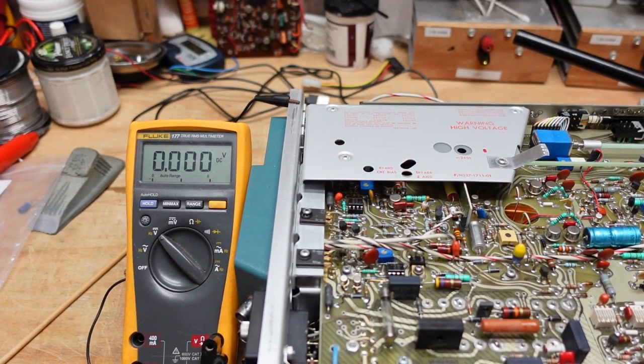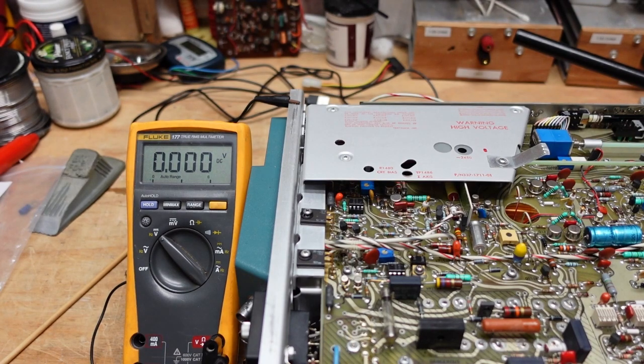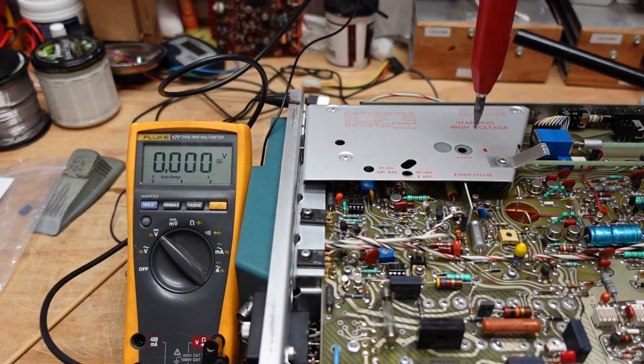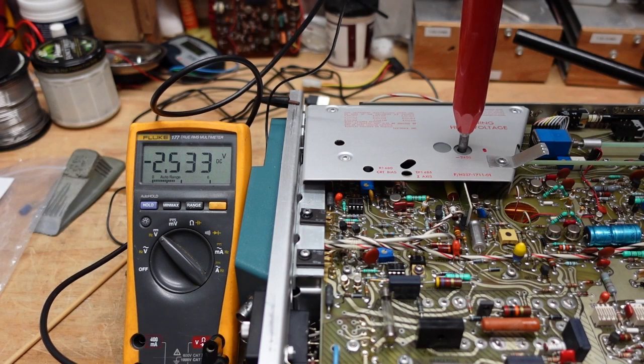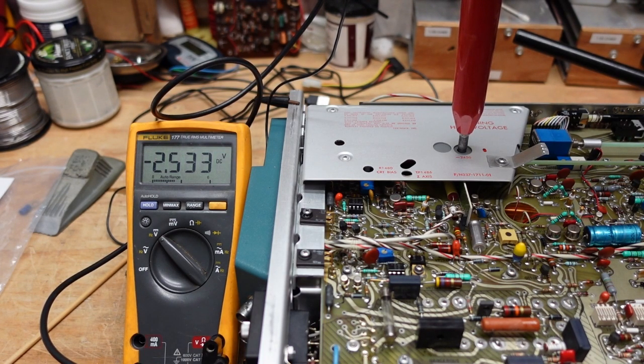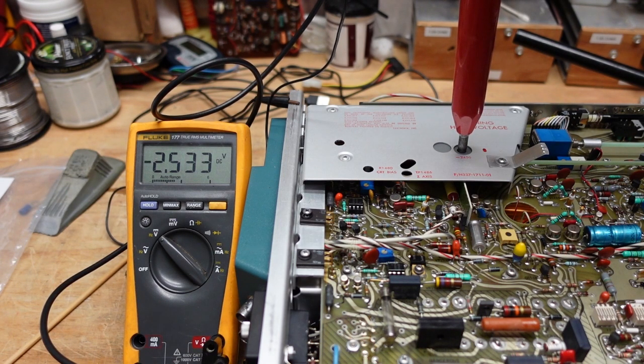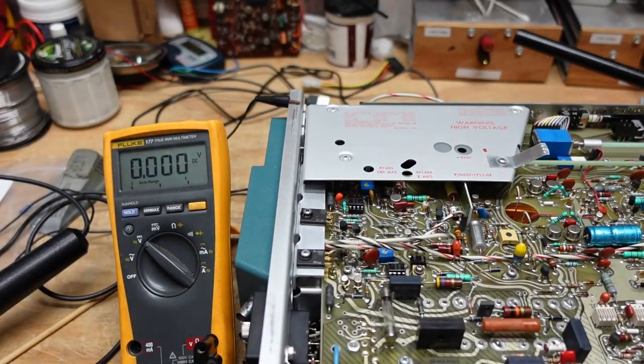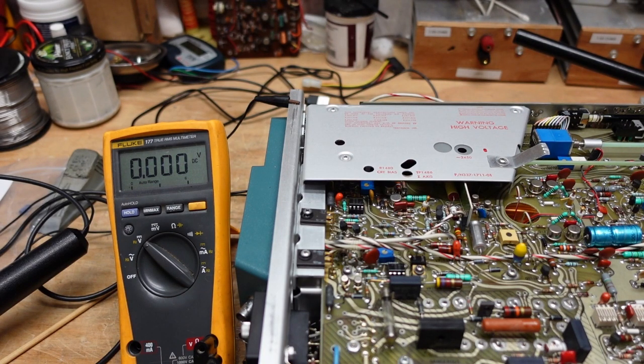We're going to turn this thing on and see what we get. And there you have it: negative 2.533. Now remember this is a thousand to one divider, so that's 2500 volts. It looks like we have good high voltage. However, we need to check the really high voltage, the 14 to 16 kilovolt, and I'll show you how we do that.